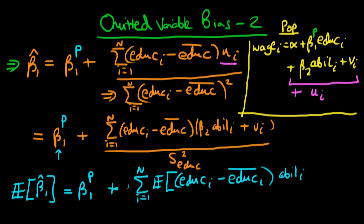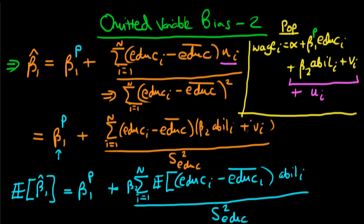We put beta_2 out the front, and we still have the sample variance of education S_education squared on the denominator. Note that I've dropped the term involving V_i — this is because if V_i is orthogonal to years of education in the population model, then the zero conditional mean assumption from the Gauss-Markov assumptions means that term disappears when we take expectations.